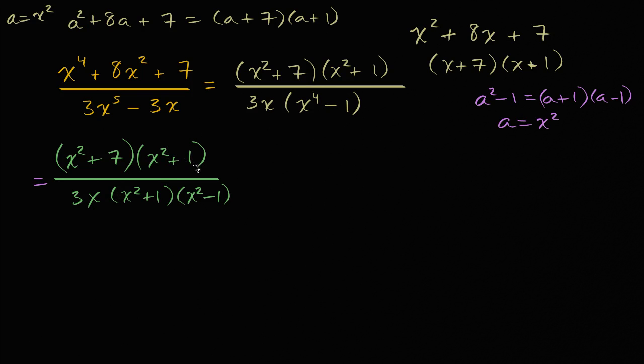Now, clearly I have an x squared plus one in the numerator, x squared plus one in the denominator, and so I could cancel them out, and I'm going to be left with in the numerator, x squared plus seven over 3x times x squared minus one.